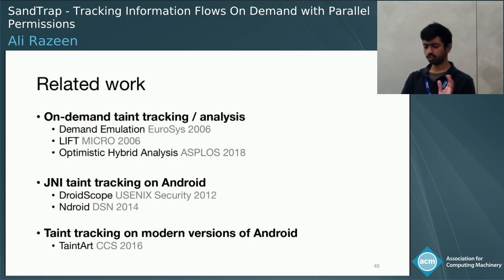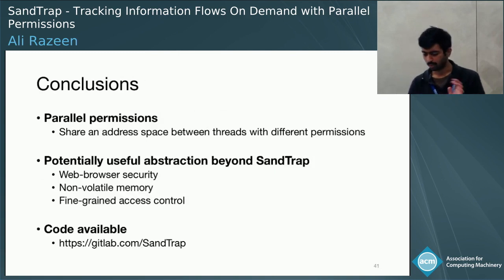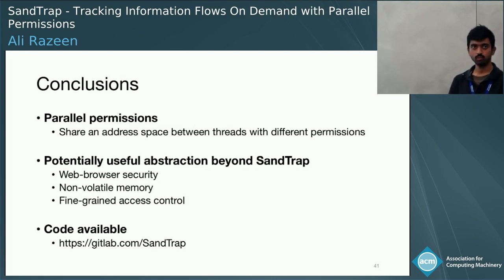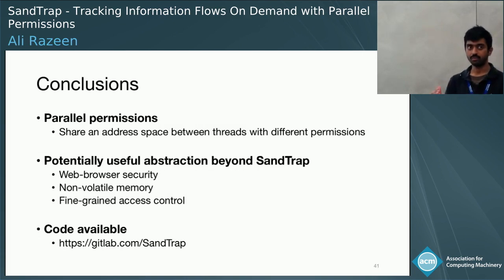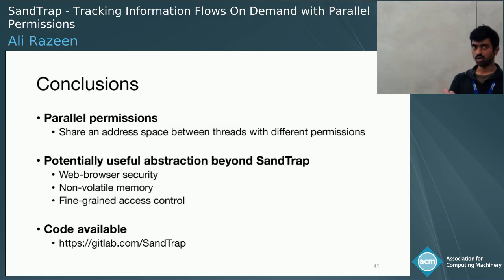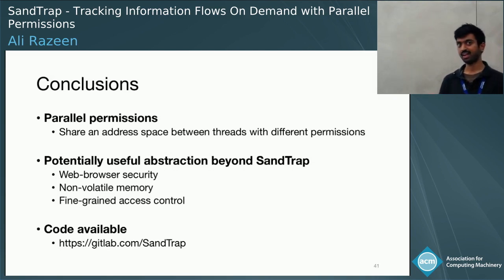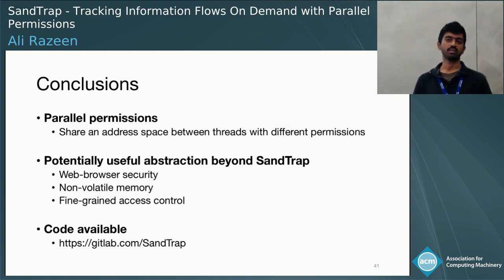The star of today's show is undoubtedly parallel permissions, which allows us to share an address space between threads with different permissions. Although I have presented this in the context of SandTrap and native code taint tracking, we are excited because we think there are a lot of use cases. Our code is available for SandTrap, and in a week or two I'll also make available our Raspberry Pi implementation of parallel permissions. Thank you for listening, and I'll be happy to take questions.